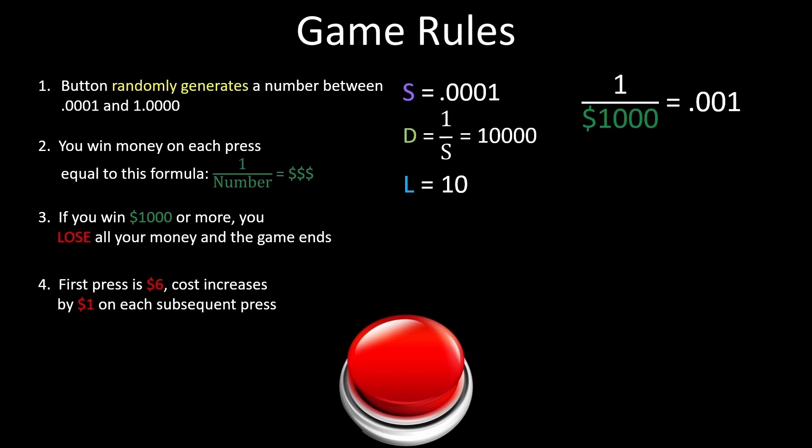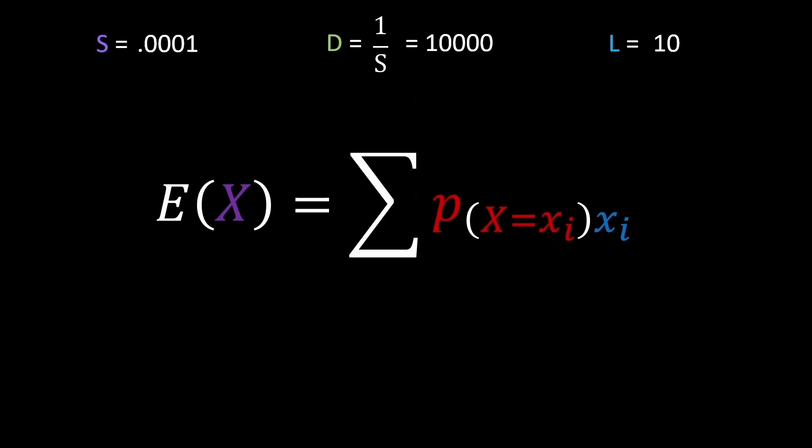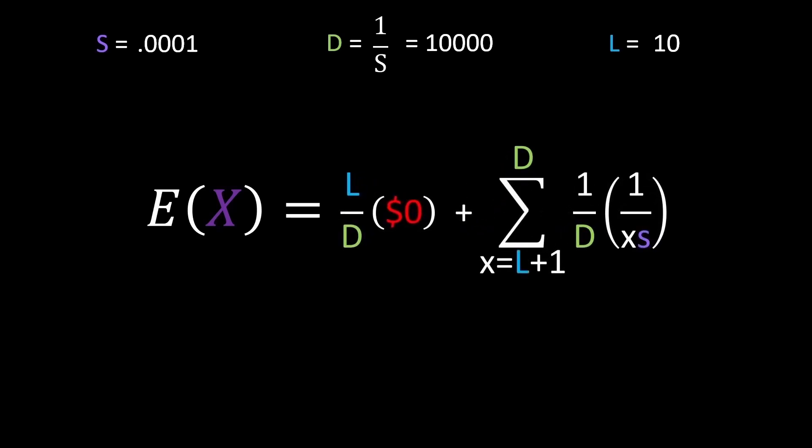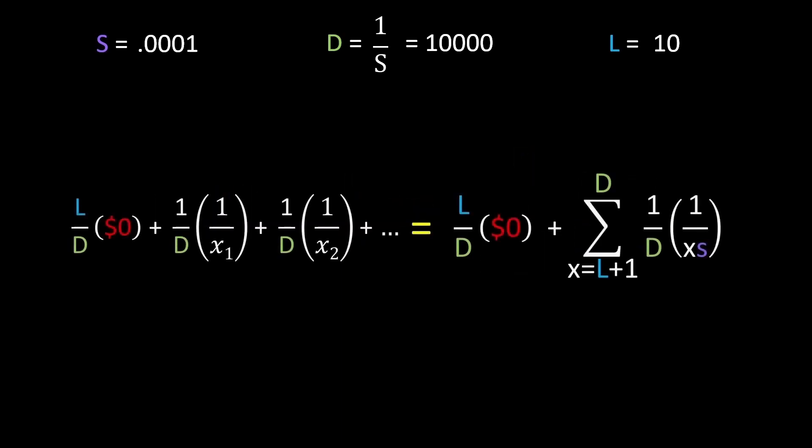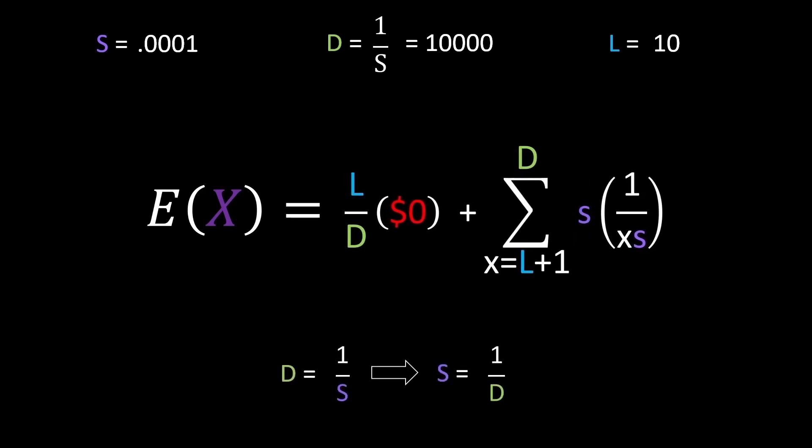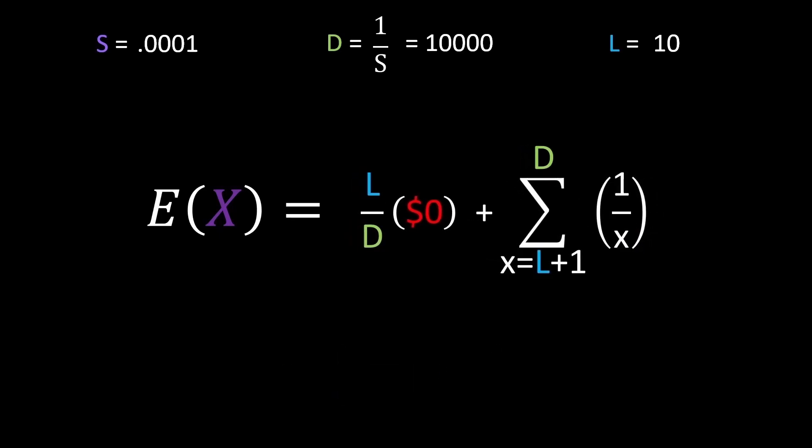Then, we can finally take all these numbers to our formula. Plugging in our variables, we see that the expected value is equal to L over d times zero plus all the other dollar amounts times 1 over d. Before we move on though, I'm going to make some slight changes to the formula to make it easier to deal with later, but all you need to know is that these two expressions mean the same thing. We can then turn 1 over d into s because of how the two variables are related and cancel out the s on bottom, giving us the sum of all fractions ranging from 1 divided by L plus 1 to 1 divided by d.